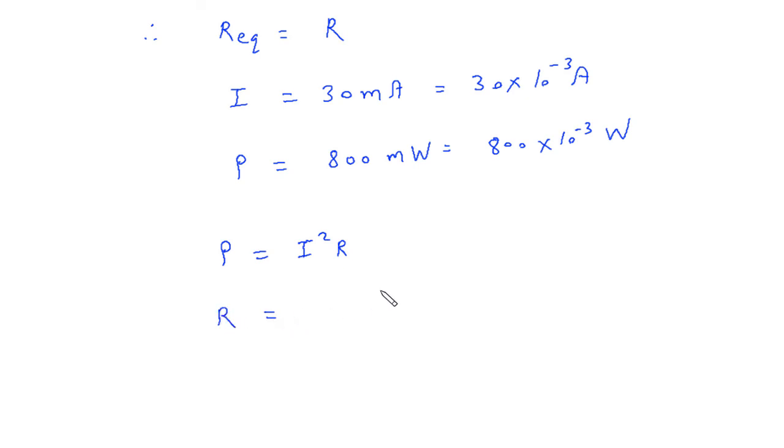R is equal to P by I square. Power is 800 into 10 raise to minus 3 divided by I square. I is 30 into 30 into 10 raise to minus 3 whole square.